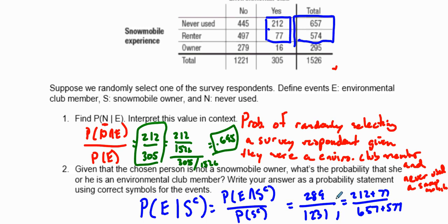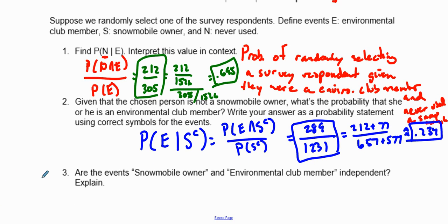Put them in the calculator: 289 divided by 1,231 equals approximately 0.234. Hopefully that makes sense on how to use the notation and set this up.